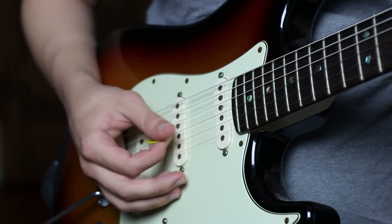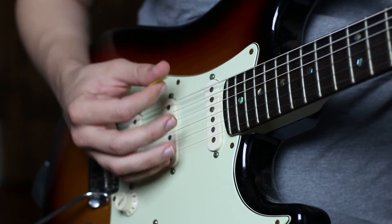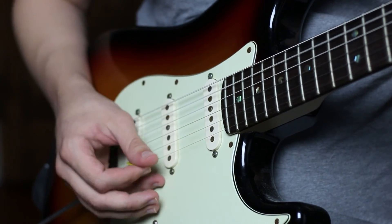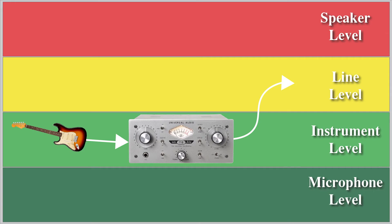The pickups of an electric guitar convert the vibrations of the strings into electrical currents. Similar to those from a microphone, the electrical currents from a guitar pickup are very weak. A preamp can be used here as well, in this situation boosting instrument level to line level.